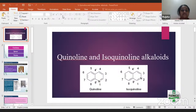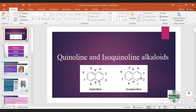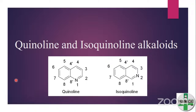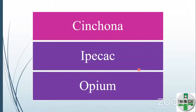Next is quinoline and isoquinoline alkaloids. The quinoline ring has nitrogen at position one, whereas isoquinoline has it at position two — the only difference is the position of the nitrogen. Under this class, three drugs will be studied: cinchona under quinoline, and ipecac and opium under isoquinoline.